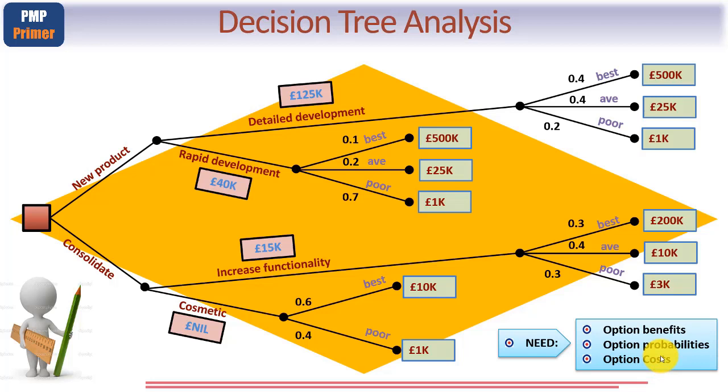So the first thing you need to do is to draw the diagram itself. And for that you start over at the left hand side at this square box, and you develop the branches from left to right. In this case, let's imagine that sales and marketing are considering the options of whether or not we should launch a new product in a product range.